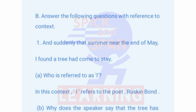Answer the following questions with reference to context. Context 1: 'And suddenly, that summer, near the end of May, I found a tree had come to stay.' Question A: Who is referred to as 'I'? In this context, 'I' refers to the poet Ruskin Bond.